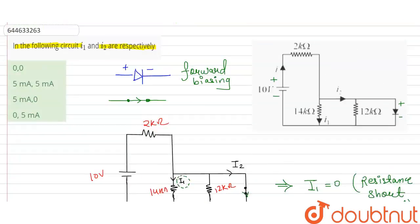So our correct option is option D: 0, 5 milli ampere. Thank you.